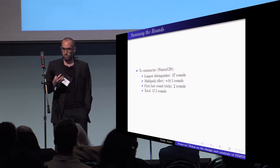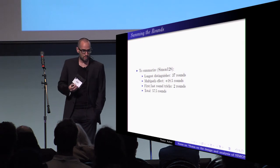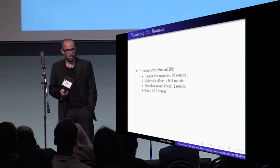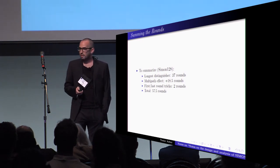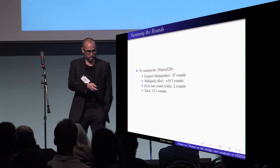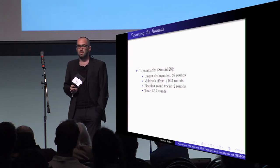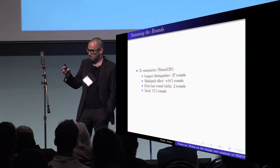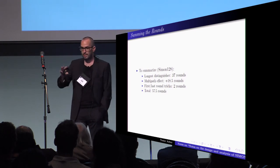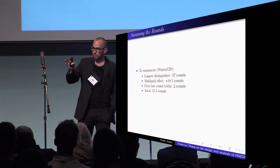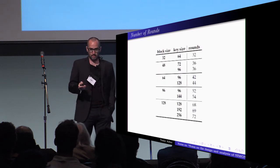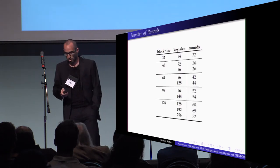The longest distinguisher is of 37 rounds. And that the multipath effect, we need to add 50% more, that's 18.5 more rounds, adding two more rounds for the first and last round tricks, which totals in 57.5 rounds that the designers, the NSA claim that this is what we believe that can be attacked. Looking at the number of rounds the cipher offers,